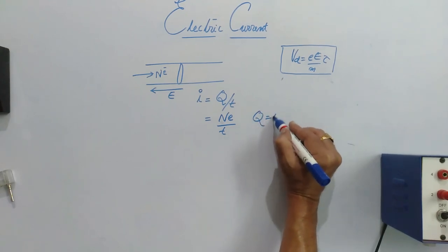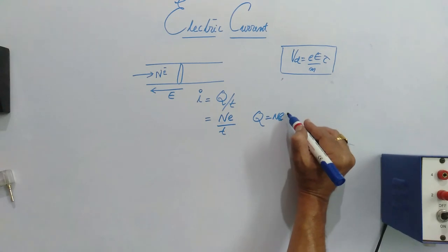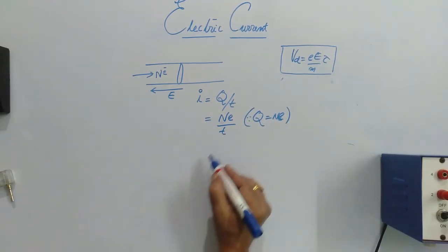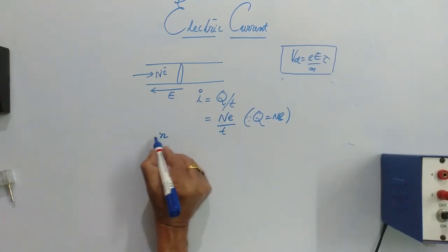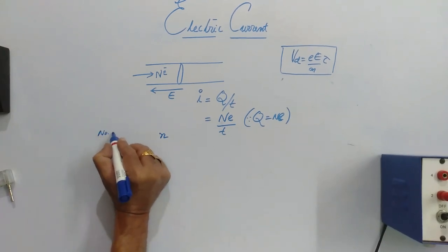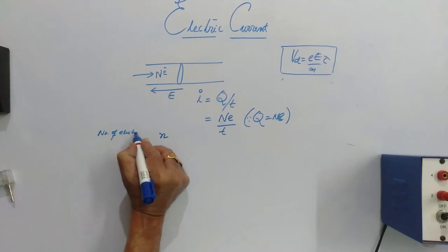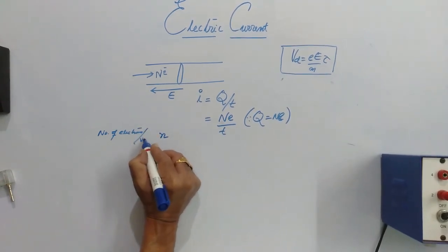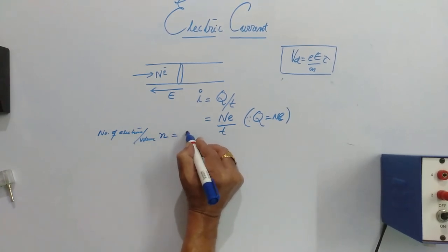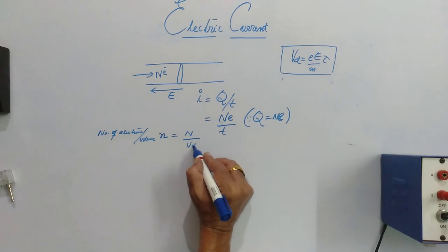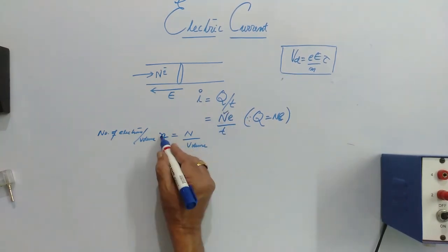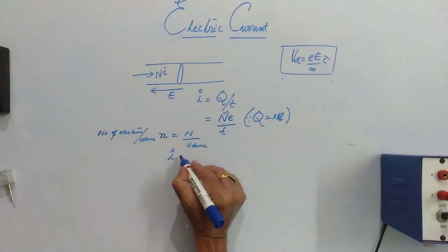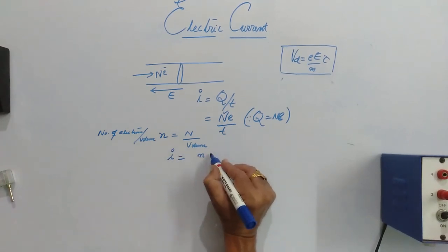Now, if we write the number of electrons per unit volume, N, what is N? The number of electrons per unit volume as N, I can write it as capital N by volume. Now, I can replace this capital N by small n into volume. So therefore, I can write I is equal to small n into volume.